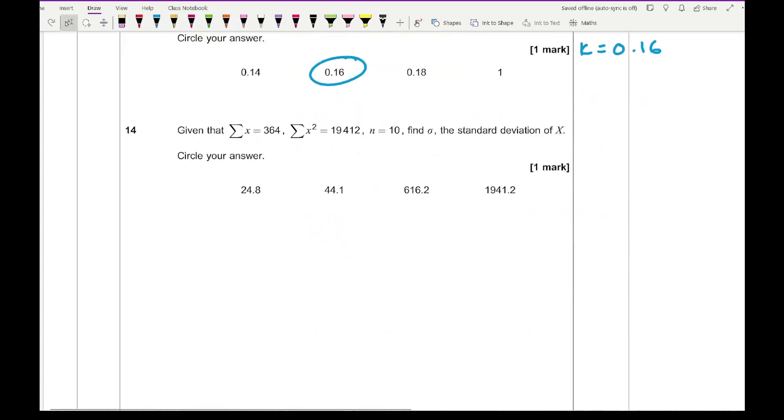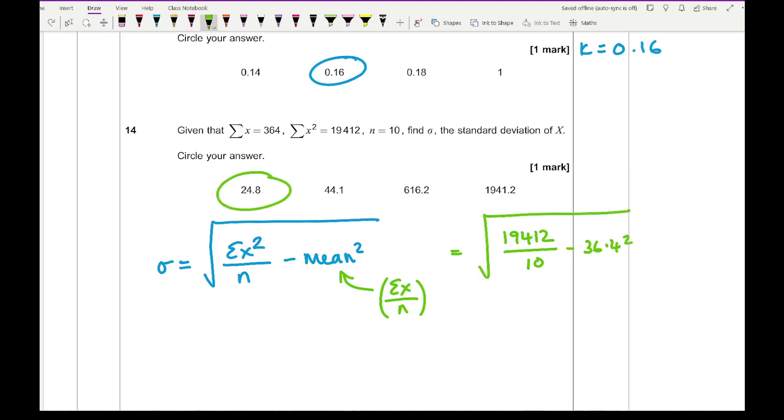Moving on to question 14, given that sum of x is 364, sum of x squared is 19412, and n equals 10, find sigma, the standard deviation of x. The formula for standard deviation is sigma x squared divided by n minus the mean squared, square rooted. The mean is sigma x over n. Entering the numbers, it's 19412 divided by 10 minus the mean 36.4 squared, square rooted, giving 24.8.